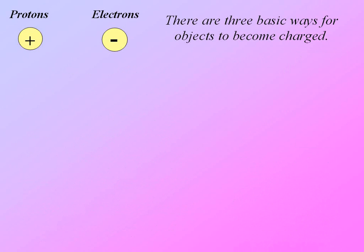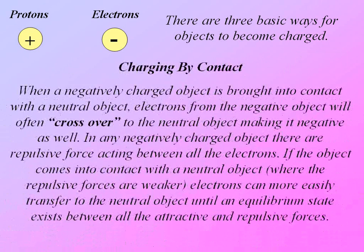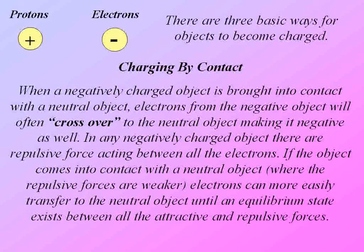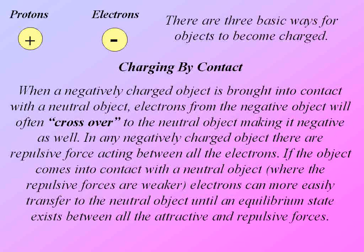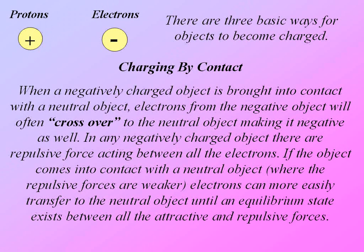Another method of becoming charged is by contact. When a negatively charged object is brought into contact with a neutral object, electrons from the negative object will often cross over to the neutral object, making it negative as well.